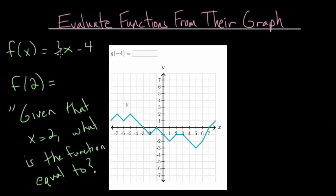When we have an equation, we just plug in x anywhere we see it inside our function. So we'd have 3 times 2 minus 4, or 6 minus 4, which is 2. So when we see f(2), we know this is equal to 2 because of the equation.